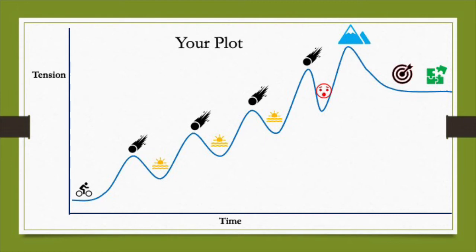As the character progresses, the obstacles get more difficult and perhaps more frequent. And just as they think they're going to reach their goal, there's the 'valley of despair' — where they think they're going to fail, something happens to stop them succeeding, and it all looks hopeless. But then they rally, they find a way, something happens, and they're able to reach their goal. Once they reach the summit and achieve what they set out to do, that's when you tie up all the loose ends — shown as a jigsaw — and answer any questions you've posed throughout the story.